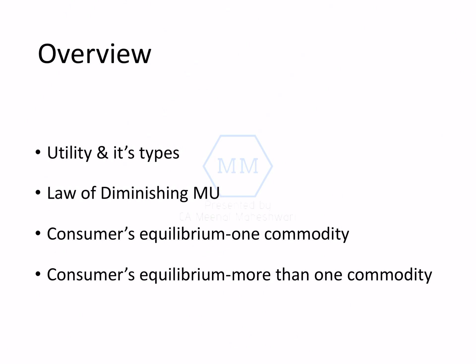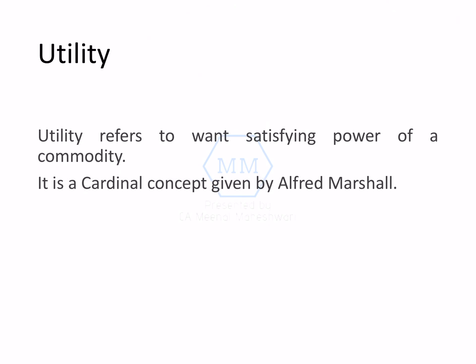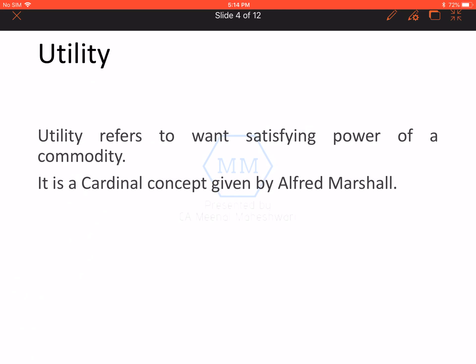In this chapter, the major topics we covered were: the concept of Utility, its types, MU and TU, Law of Diminishing Marginal Utility, and then Consumer's Equilibrium — both in case of one commodity as well as in case of more than one commodity.